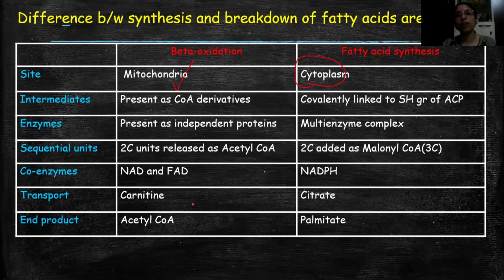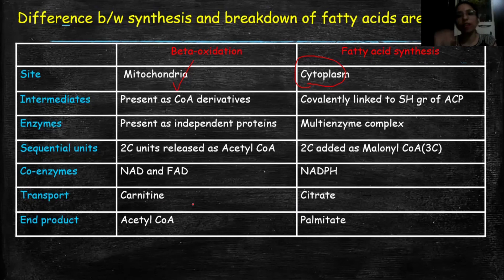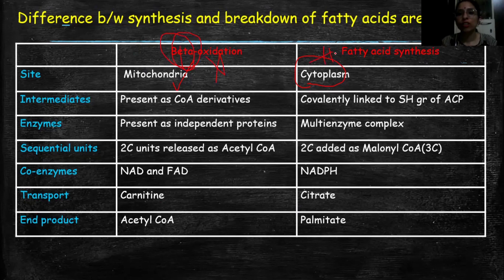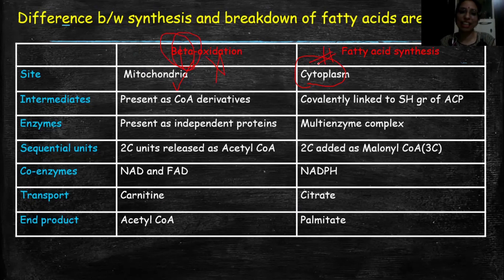The acetyl-CoA made available in the cytoplasm is used for the synthesis of fatty acids, and the end product is palmitic acid. If you want to know more about fatty acid synthesis, please mention it in the comment box. Now your homework question is: which one is catabolism and which one is anabolism — between beta-oxidation and lipogenesis? Please mention your answers in the comment box. That's all about today's session on the differences between lipogenesis and oxidation of fatty acids.